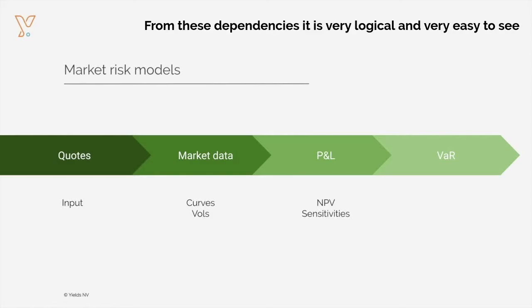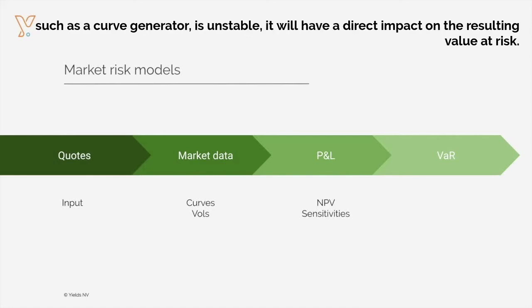From this dependency, it is fairly logical and fairly easy to see that if, for instance, one of the market data generation algorithms, such as a curve generator, is unstable, it will have a direct impact on the resulting value at risk.